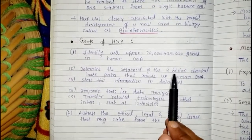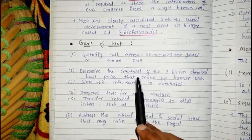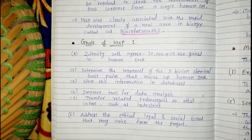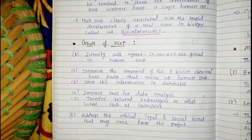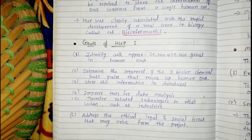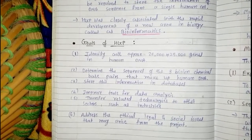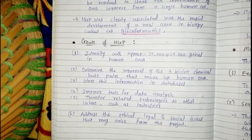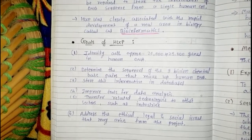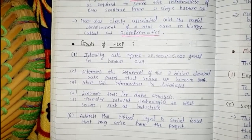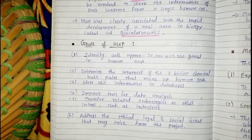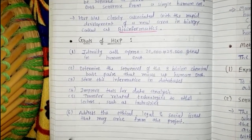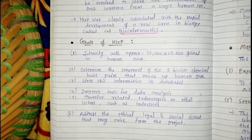The second goal was to determine the sequences of the 3 billion chemical base pairs that make up human DNA — meaning to study each and every nucleotide, from the very first to the last, to determine in what sequence they appear in the DNA. The third goal was to store this information in databases. Since the information cannot be written in books, it must be stored so future generations can use it for further research.